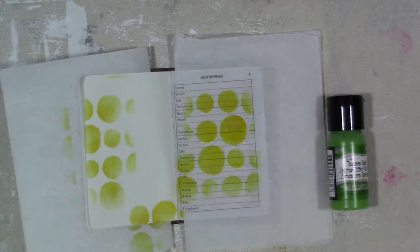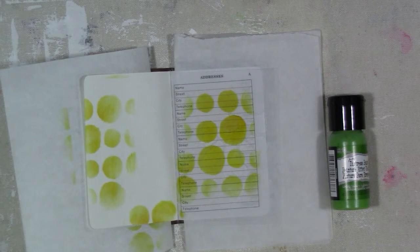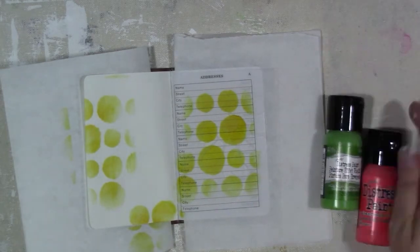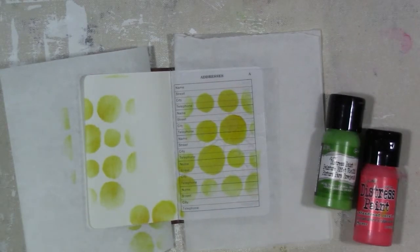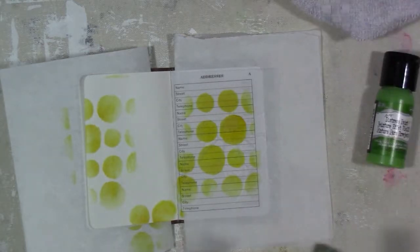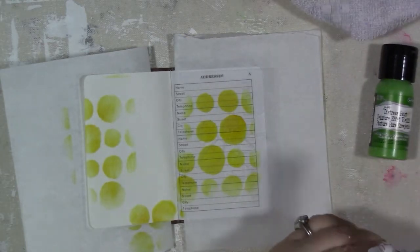I'm getting out some of my distress paints in a few different colors—a pink, a green, I pull out a blue also—and I'm going to stencil this flower onto the page.